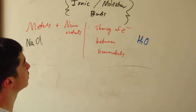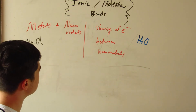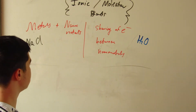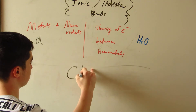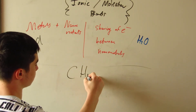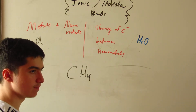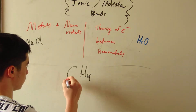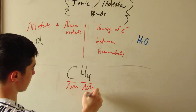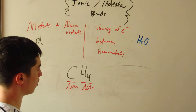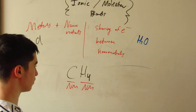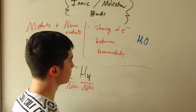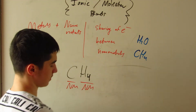Let's take another example: CH4. Is that a molecule or a compound? We have a nonmetal bonded with nonmetals — so that's a molecular bond. CH4 is a molecule.